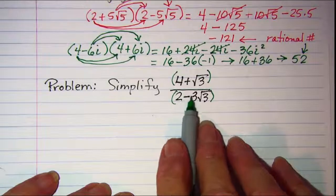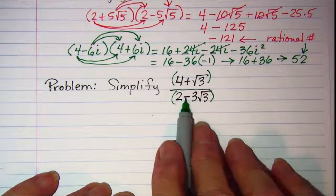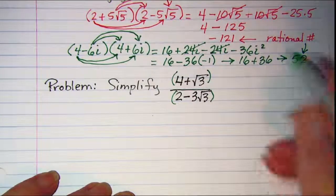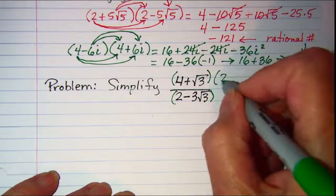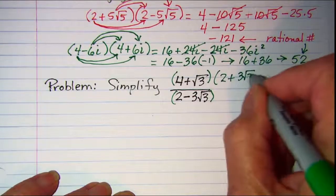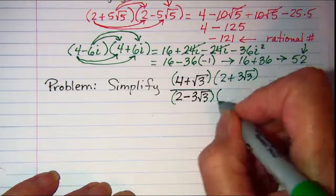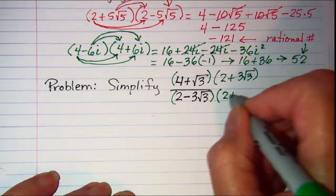So I need to multiply the top and the bottom by the conjugate of this denominator. The conjugate, all we're going to do is change this minus to a plus. So the conjugate is 2 plus 3 root 3. I need to do that multiplication on the top and the bottom.